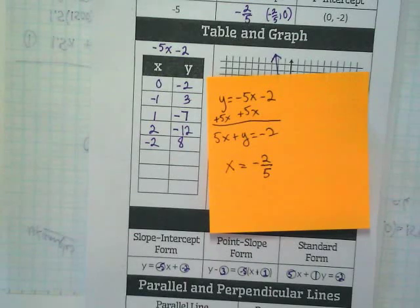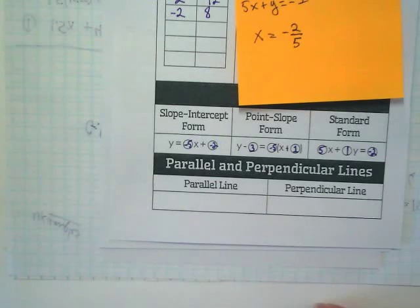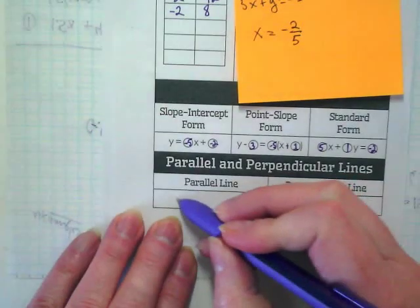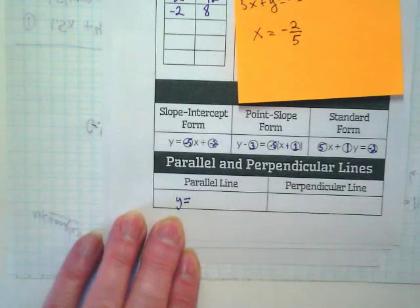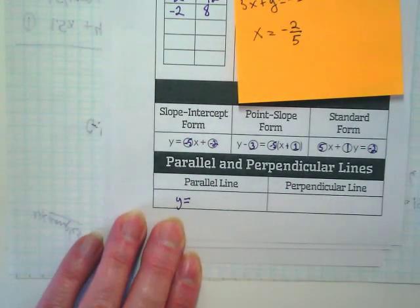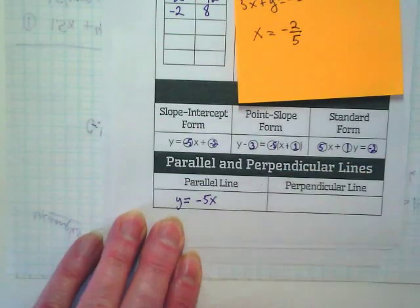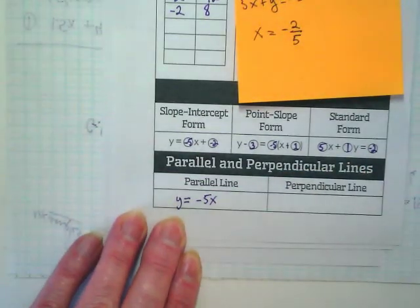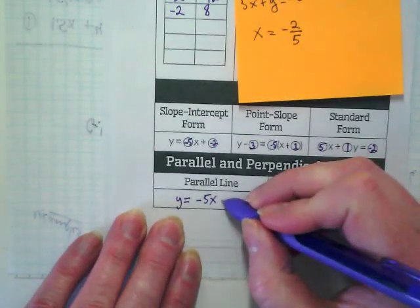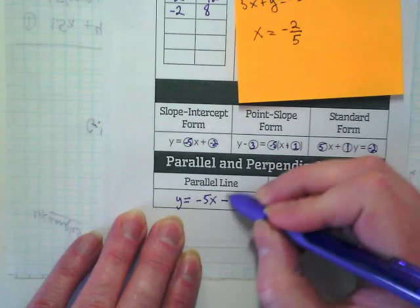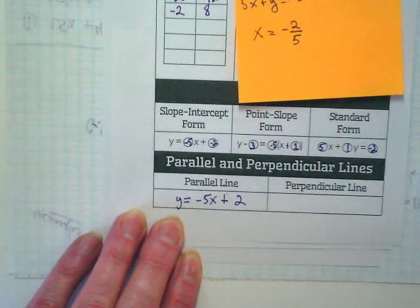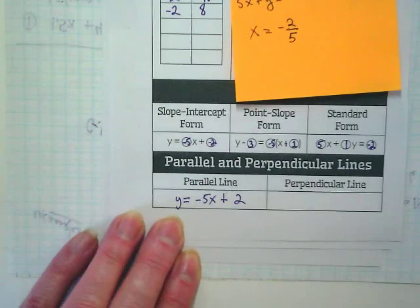What's left? Parallel and perpendicular. What do we know about parallel lines? Same slope, different y-intercepts. So this is going to say negative 5x. What do you guys want to make the y-intercept? It can't be negative 2. It can be anything else. Plus 2.